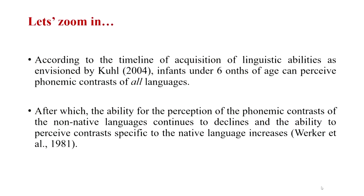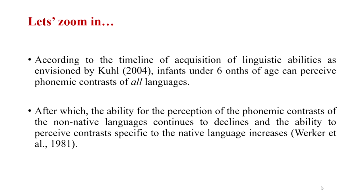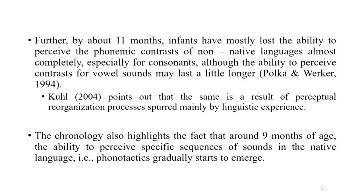Kuhl in 2004 presents a tentative chronology of how children acquire speech, from 0 to 5.5 months where they are capable of distinguishing phonetic contrasts across most languages, and by around 11 months they start experiencing a decline in perceiving foreign language contrasts while experiencing an increase in native language contrast perception. This chronology highlights that around 9 months of age, the ability to perceive language-specific sequences of sounds — phonotactics — gradually starts to emerge.